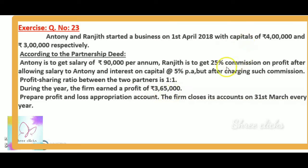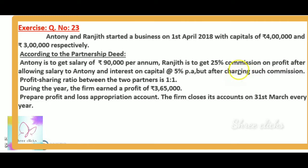We have to calculate the commission on the basis of after charging such commission. We already have a formula: net profit before commission multiplied by percentage of commission, divided by 100 plus percentage of commission. That is x into 25 divided by 100 plus 25, which equals x into 25 divided by 125. That amount is the commission.